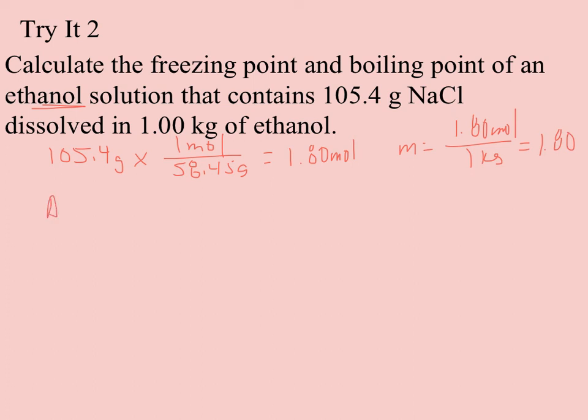So my change in freezing point, since it's ethanol, I'm going to have a KF of 1.99 times little m of 1.80. And NaCl, that's a metal and a non-metal, so it's going to have two ions forming. So my change in freezing point is 7.16 degrees. And if I look at my original freezing point, ethanol, pure ethanol will freeze at minus 114.1. And now I subtract the 7.2, round to two sig figs. And suddenly my freezing point is down to minus 121.3 degrees Celsius.